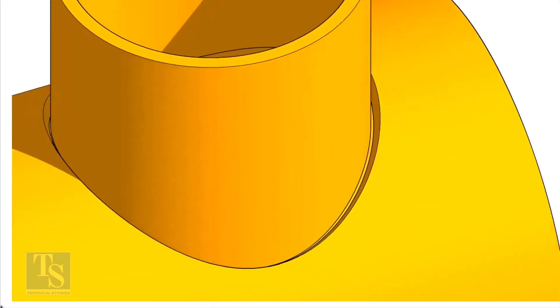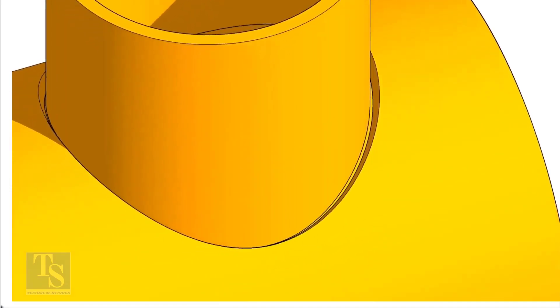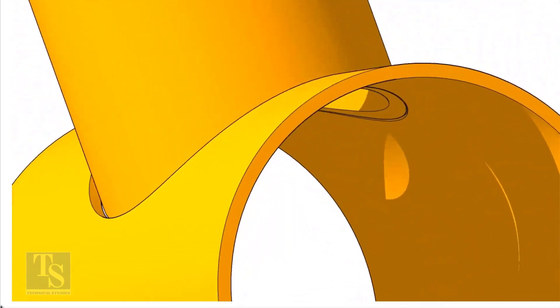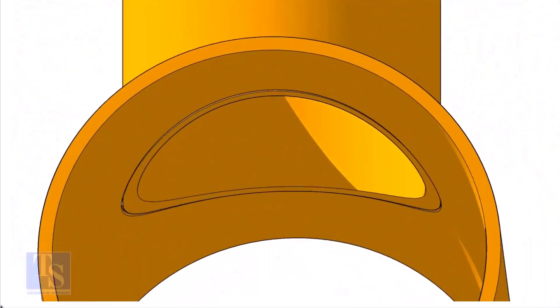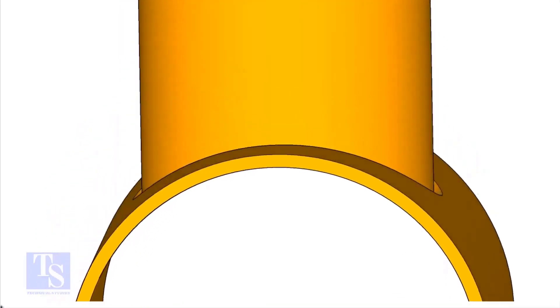On the branch pipe, there is no bevel preparation, but the cut-back cut is done. The end of the branch is level with the inside diameter of the header pipe.